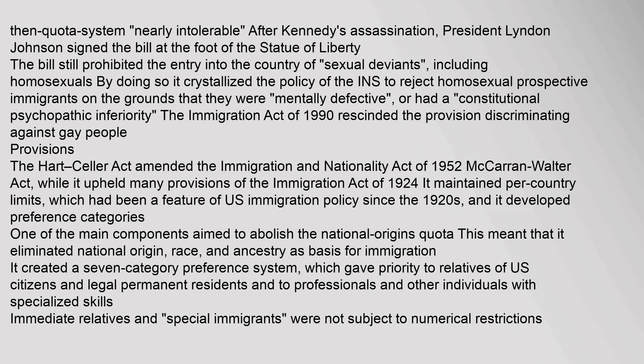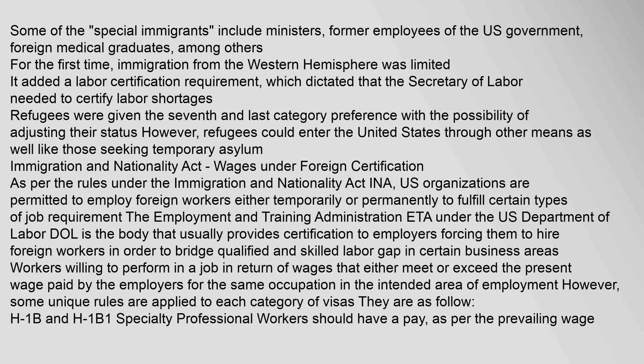Some of the special immigrants include ministers, former employees of the U.S. government, and foreign medical graduates, among others. For the first time, immigration from the Western Hemisphere was limited. It added a labor certification requirement, which dictated that the Secretary of Labor needed to certify labor shortages. Refugees were given the seventh and last category preference, with the possibility of adjusting their status. However, refugees could enter the United States through other means as well, like those seeking temporary asylum.